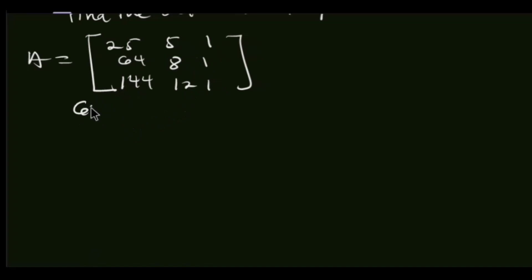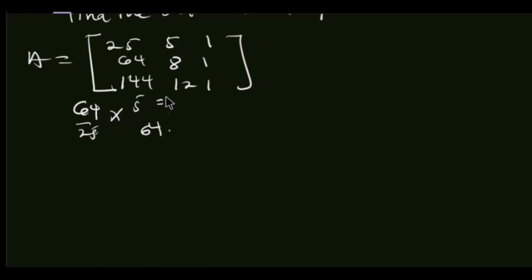To start with, you need to compute 64 over 25 as your multiplier. You divide this by 25 and multiply it by all the terms in the first row. So 64/25 times 25 gives 64 — those cancel. Then 64/25 times 5: that gives 12.8. And 64/25 times 1 gives 2.56.